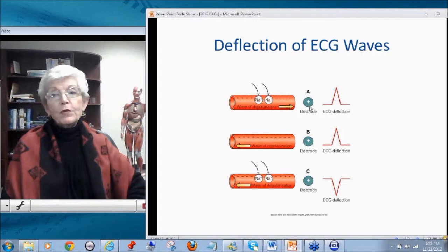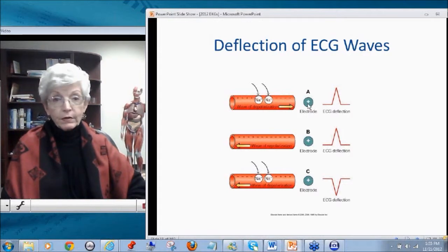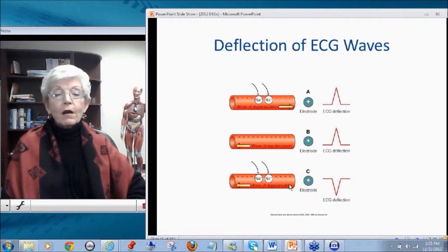Basically, if you were a camera and you were sitting on the positive electrode or you were an eye sitting on the positive electrode and you saw the wave of depolarization coming towards you, you would get a positive deflection. If you saw the wave going away from you during depolarization, you would get a negative deflection.